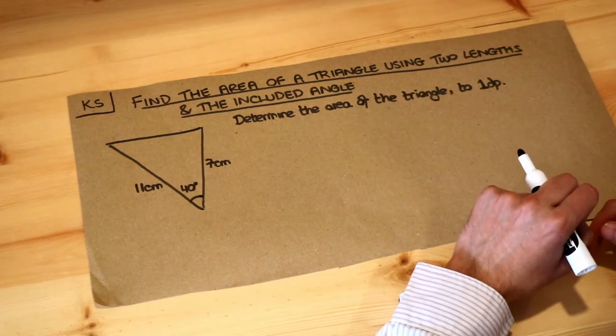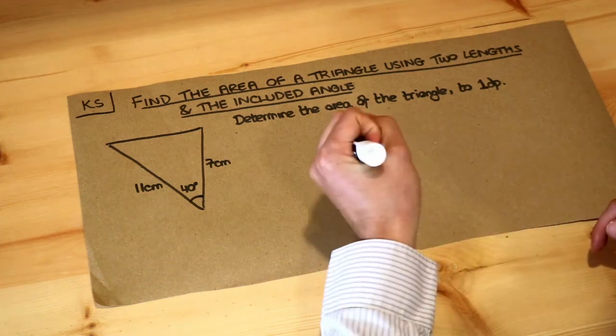Now early on in your maths education you would have learned how to find the area of a triangle by doing half times base times height.